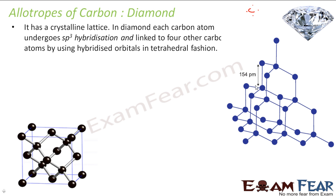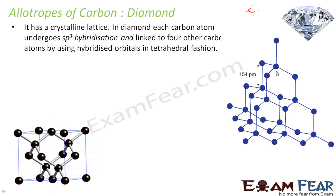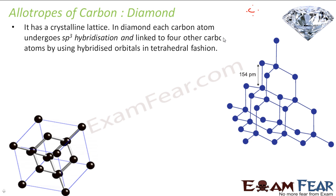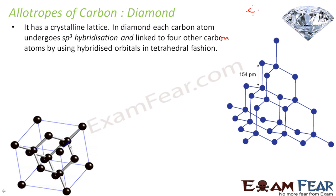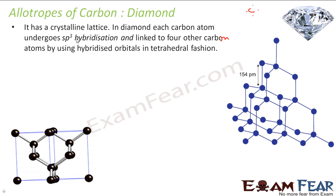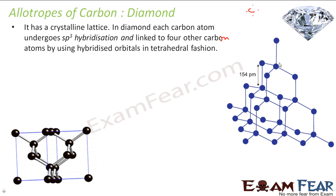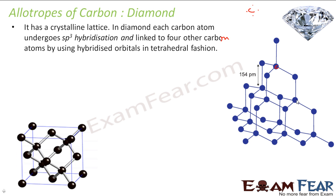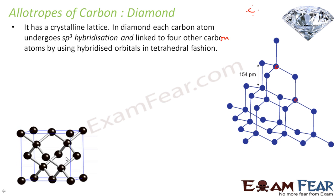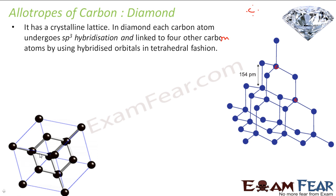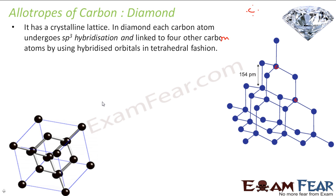In diamond, all 4 bonds are sigma bonds and each carbon is linked to 4 carbon atoms in a tetrahedral arrangement — all tetrahedral structure. Diamond is not a good conductor of electricity because all electrons are bonded. Diamond is covalent, yet it is very hard. Although covalent compounds are generally soft, diamond is an exception because its structure forms a gigantic three-dimensional network where all carbons are linked, making it extremely hard.